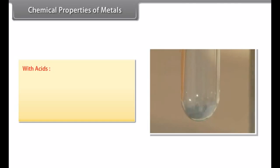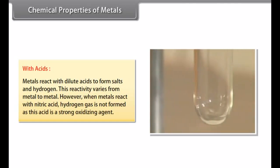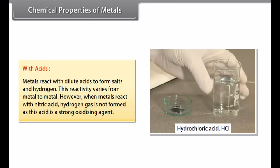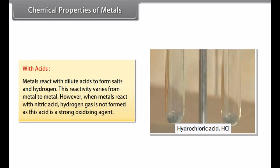With acids. Metals react with dilute acids to form salts and hydrogen. This reactivity varies from metal to metal. However, when metals react with nitric acid, hydrogen gas is not formed as this acid is a strong oxidizing agent.